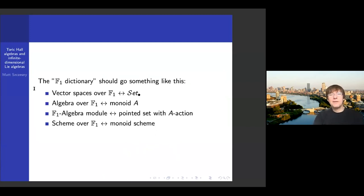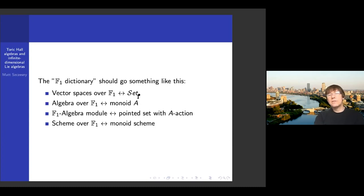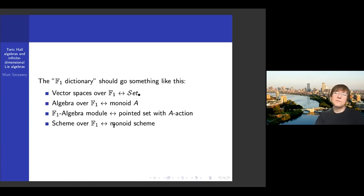The basic dictionary is: the category of vector spaces over F₁ should be pointed sets; an algebra over F₁ should be a monoid — all structures over F₁ are non-additive, you lose addition as you go from vector spaces to sets, and from algebras to monoids; the notion of module becomes a pointed set with an action of the monoid. It's therefore not surprising that the notion of a scheme or algebraic variety over F₁ should be something built out of monoids — and these are monoid schemes.